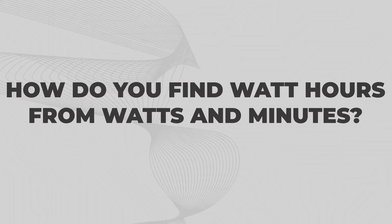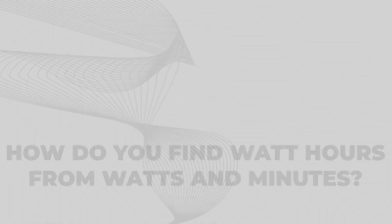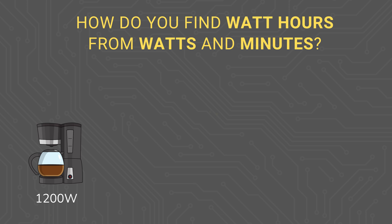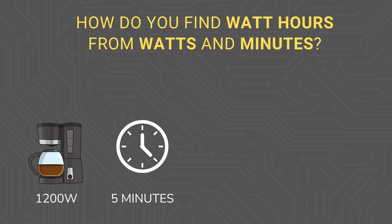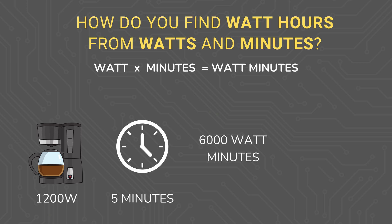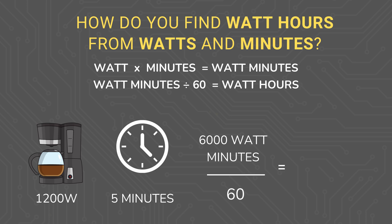How do you find watt hours from watts and minutes? Similar to finding watt hours, there's just one extra step to go from watts and minutes to watt hours. For example, if we have a coffee maker that operates at 1200 watts but only brews coffee for five minutes, we can multiply 1200 watts times five minutes to give us 6000 watt minutes, and then divide that by 60 since there are 60 minutes in an hour, to give us 100 watt hours.